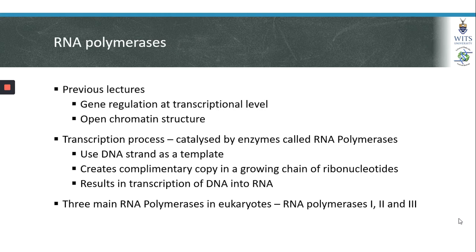In section 1 we looked at gene regulation at the transcriptional level, focusing on how chromatin modifying enzymes are involved in either compressing or opening up chromatin structure. In this lecture we will look at the process of transcription itself. Transcription is catalyzed by a group of enzymes called RNA polymerases, which use a DNA strand as a template to create a complementary copy in a growing chain of ribonucleotides, resulting in the transcription of DNA into RNA.